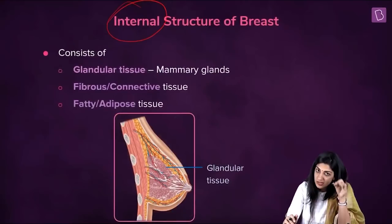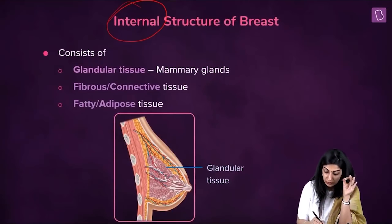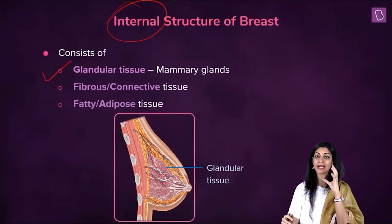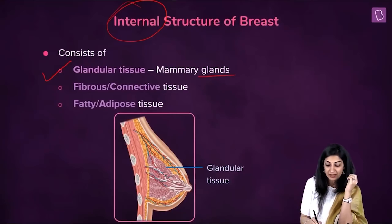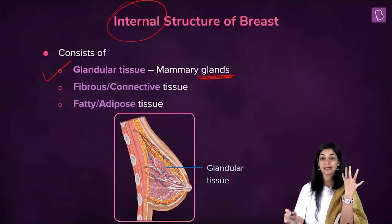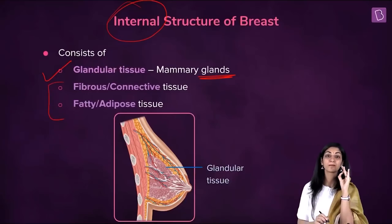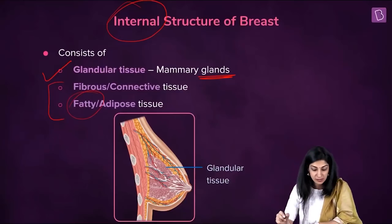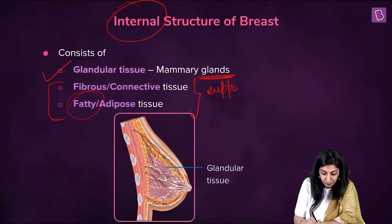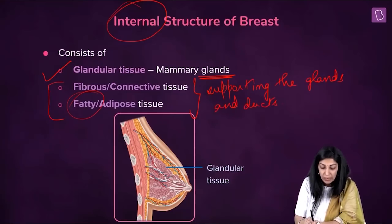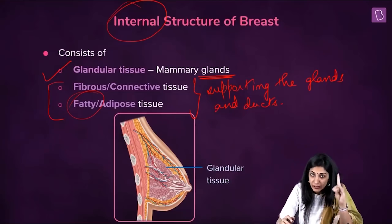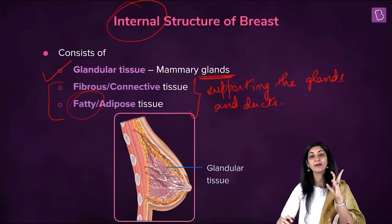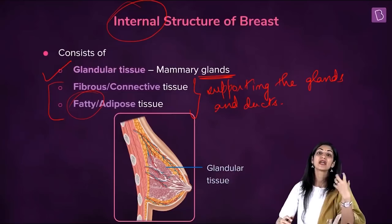Now coming to internal structure, which is very important. Internally, a breast consists chiefly of glandular tissue — that is the functional part, which are called mammary glands. Supporting the glands, there are two other tissues: fibrous tissue and fatty or adipose tissue. These are supporting the mammary glands and the ducts.